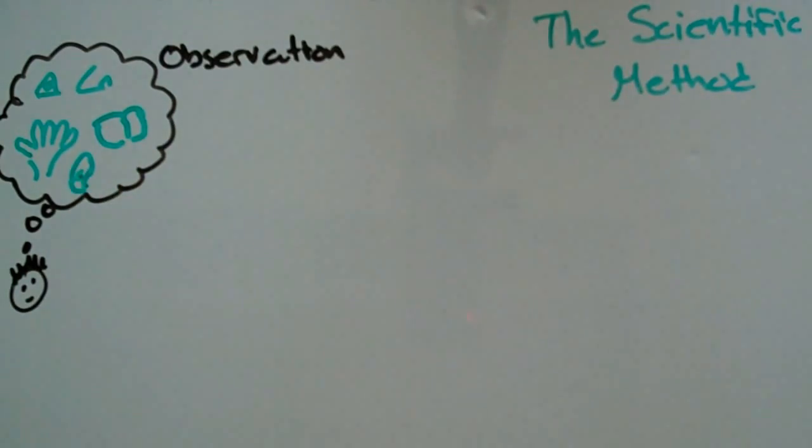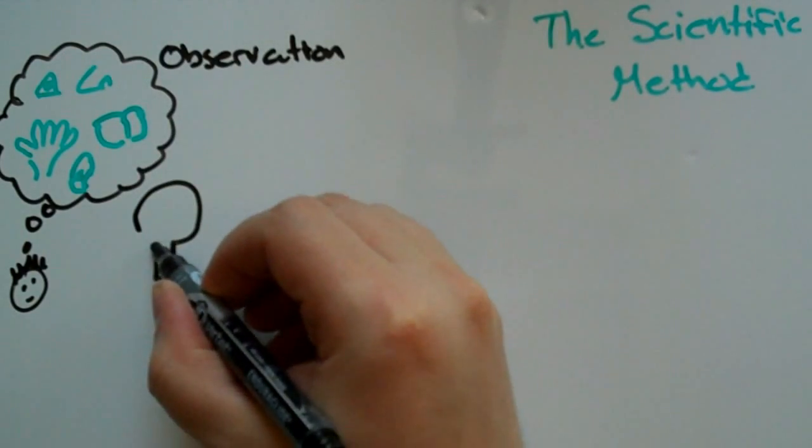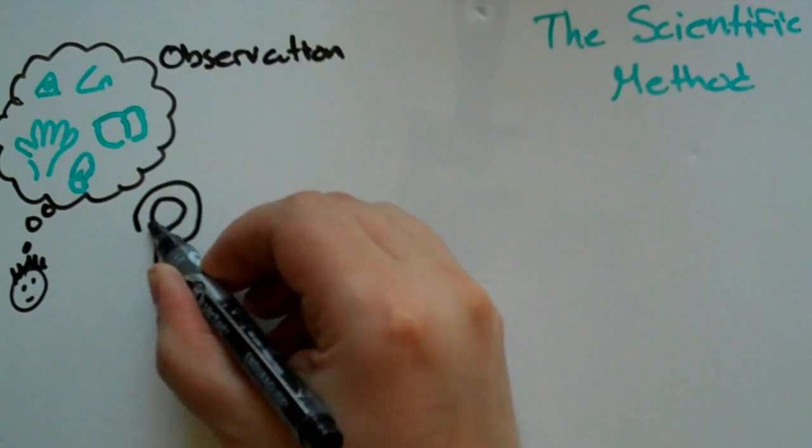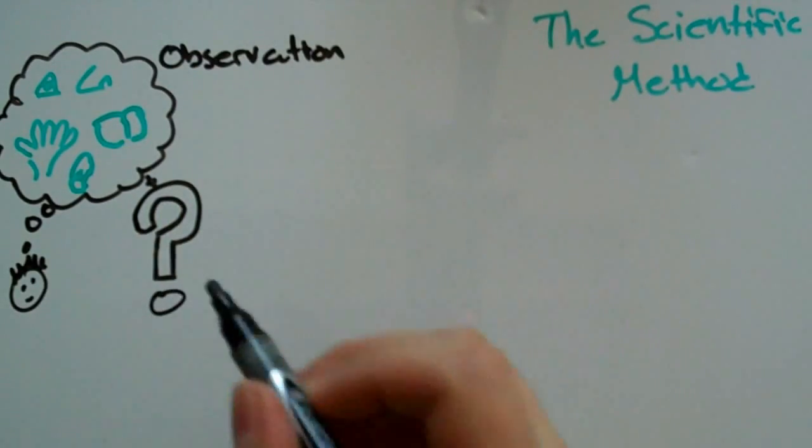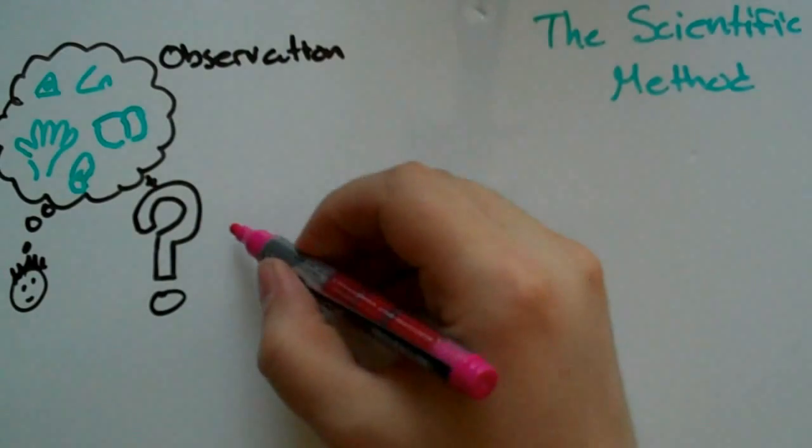Now, using your powers of observation leads to a question. What causes something that we see to happen in the natural world? So our next step would be to make a statement, a hypothesis.